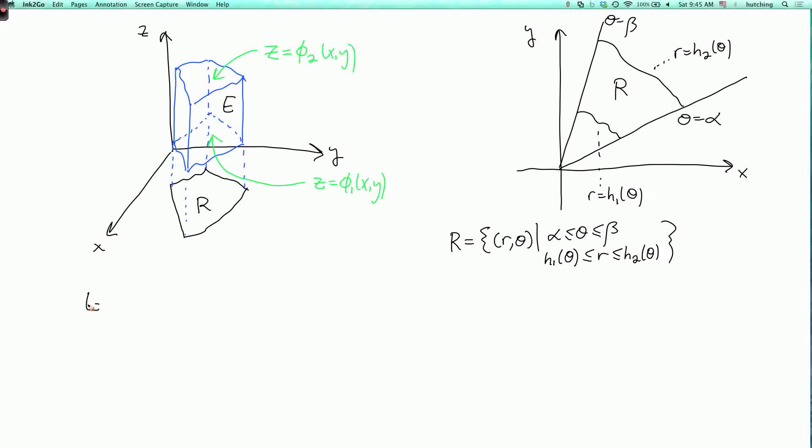So E is the set of x, y, z such that x, y is in the region R, and phi1 of x, y is less than or equal to z is less than or equal to phi2 of x, y. So we have some solid region whose shadow is one of these polar regions.